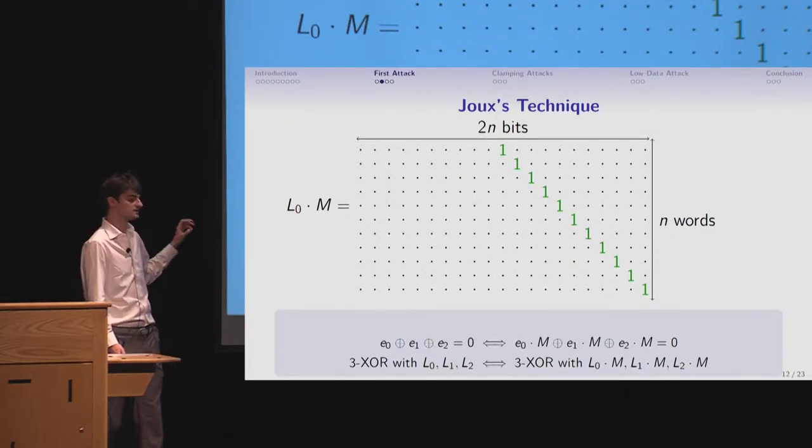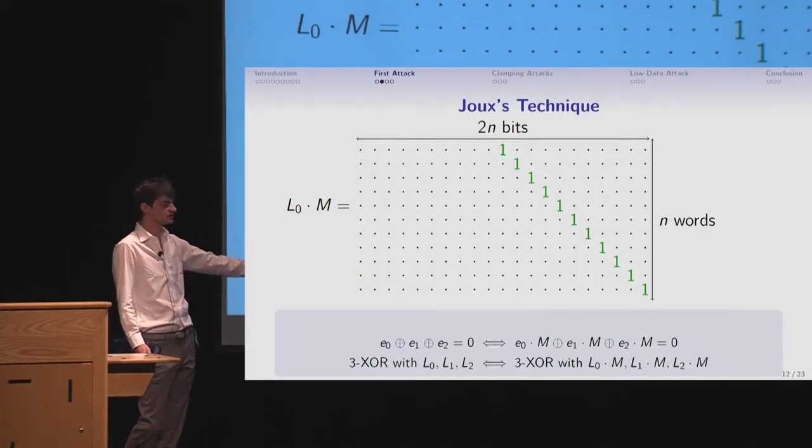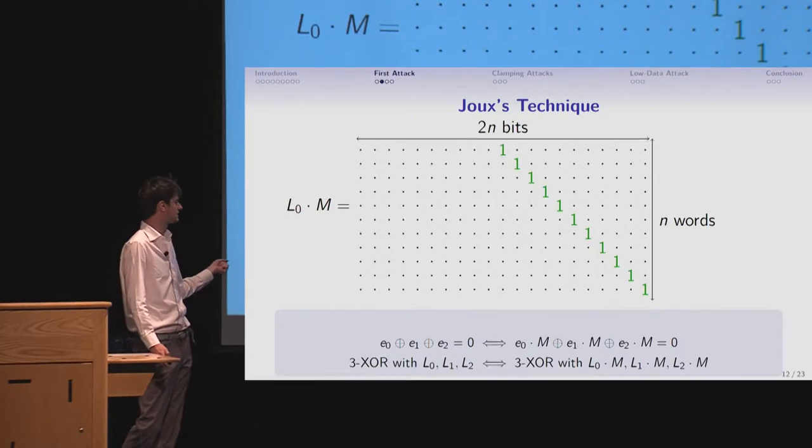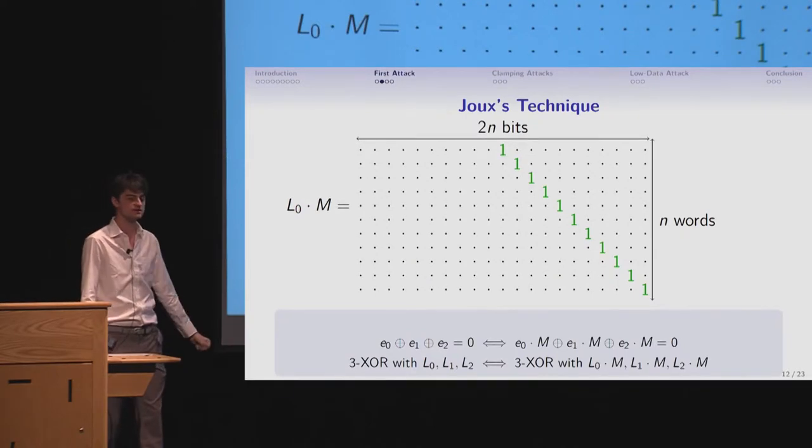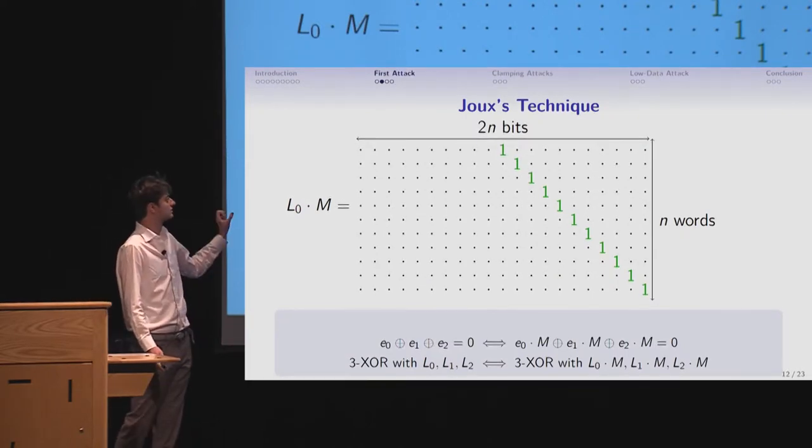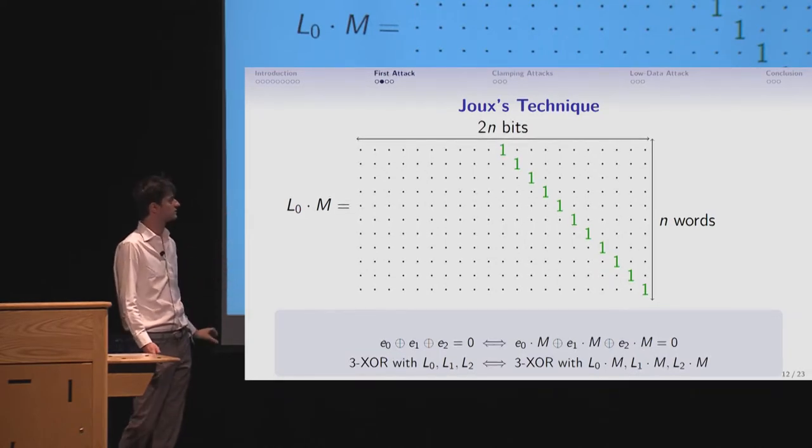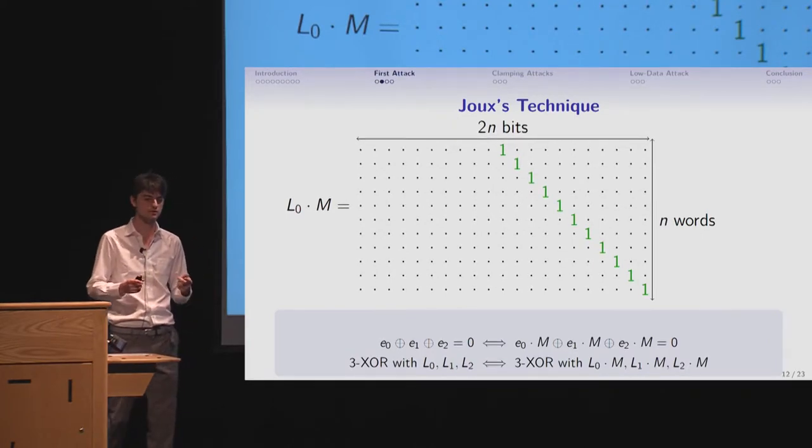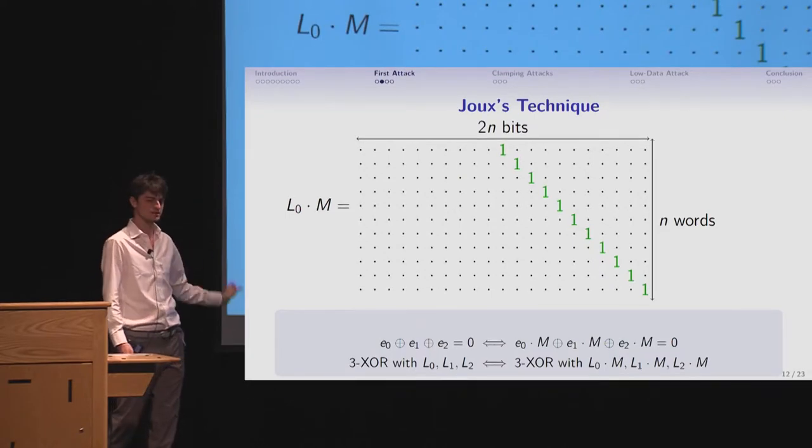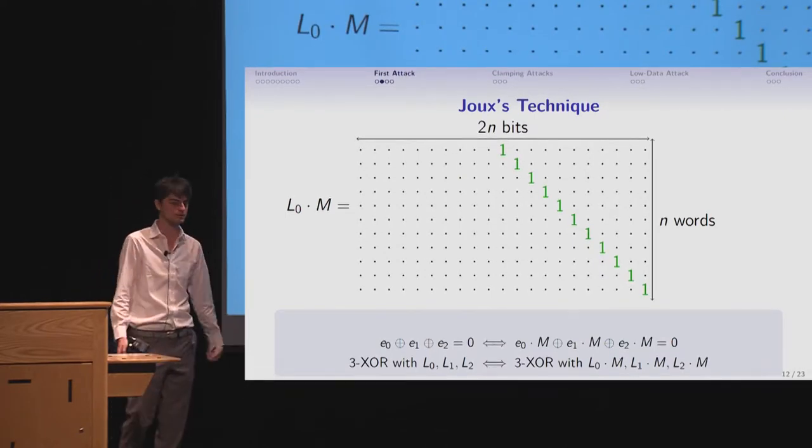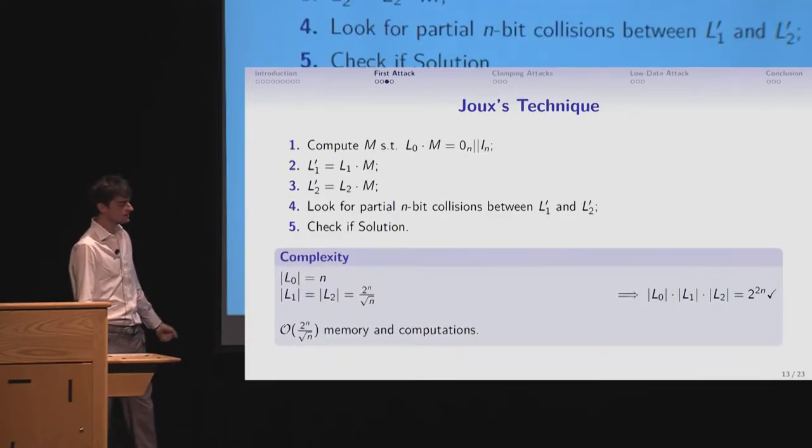And the idea is that this transformation matrix being invertible, the transform problem with the 3-XOR with the transform list will give exactly the same solution as the original 3-XOR problem. And it's easier to work on the transform list. Why? Because you know you have one list with only words that starts by zeros. So for the two other elements you want to find, you know that we'll have to have an n bit partial collision on them. And we know how to look for collision. It's easier than solving the 3-XOR.